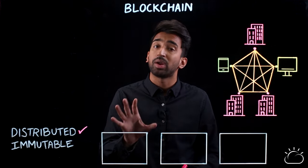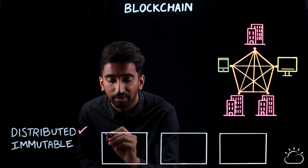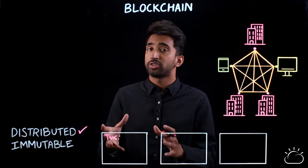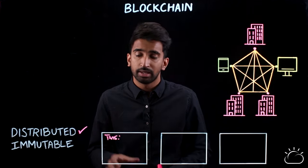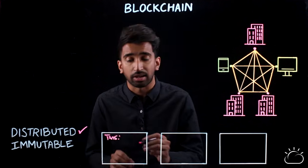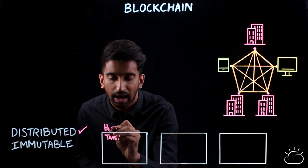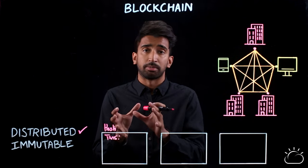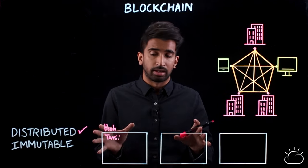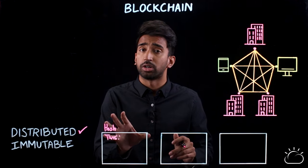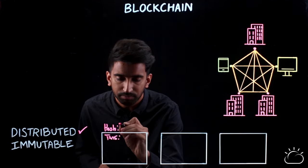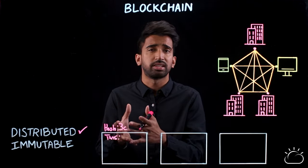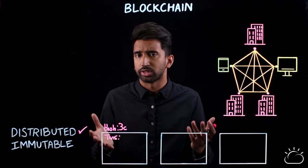In a block, we have three major pieces. First, we have the transactions — all the transactions that occurred when that block was created. In addition, there's going to be a hash. A hash is essentially a digital fingerprint. It represents the transactions in the block and it's completely unique, so if any of the transactions were to be changed, the hash would also change. Generally, it's an alphanumeric sequence that's usually a lot longer and more secure.